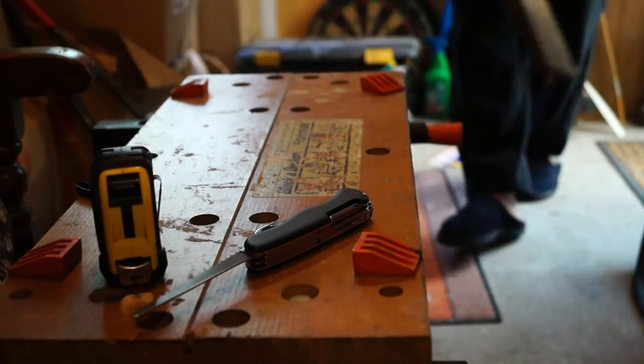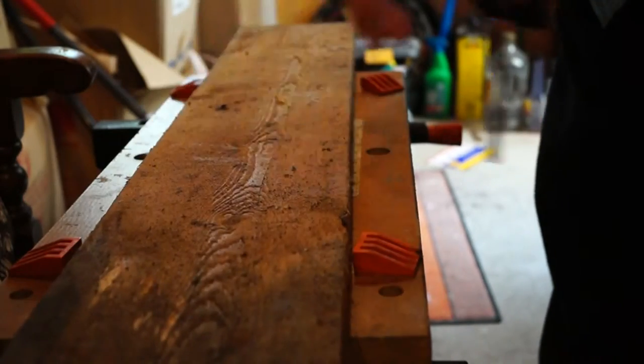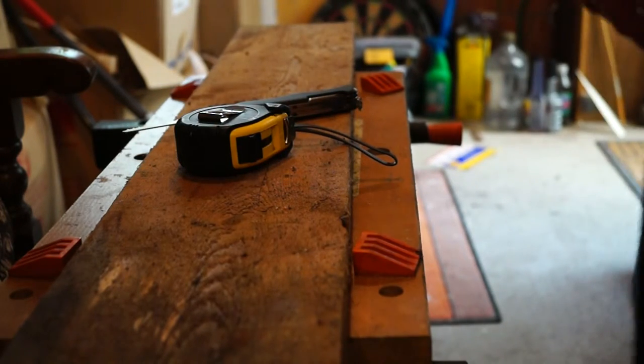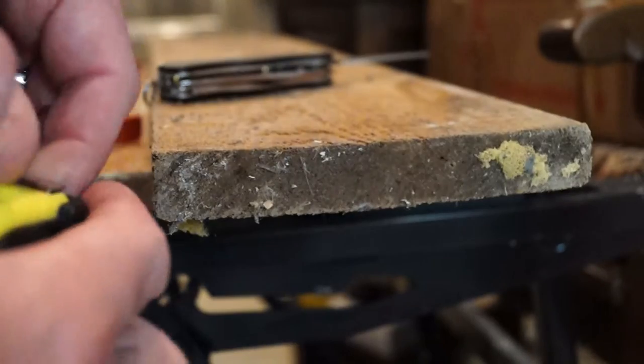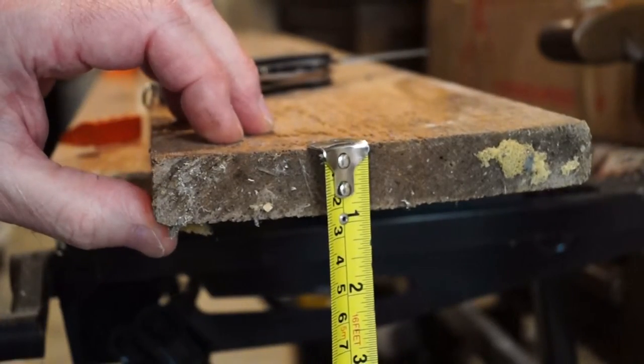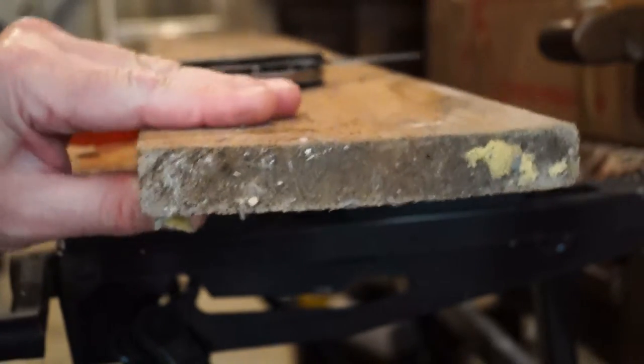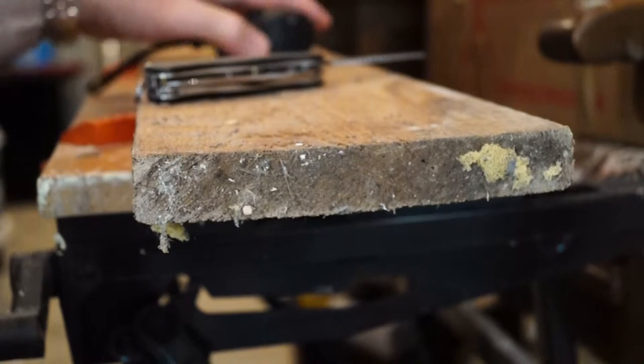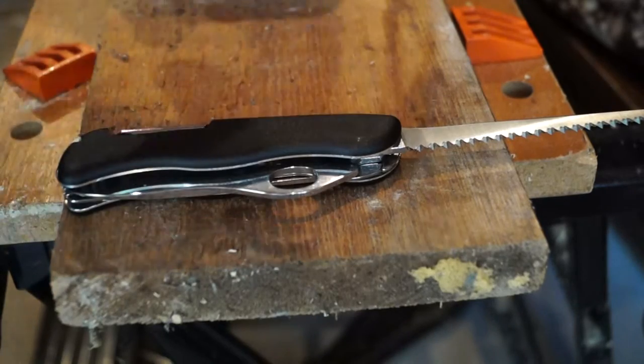Okay, first up we're going to take a look at a proper little plank. Let's take a look at it. Okay, this little fellow clocks in at one inch by six inches and is a fairly hefty bit of a plank too. Right, okay then, let's commence with the sawing.